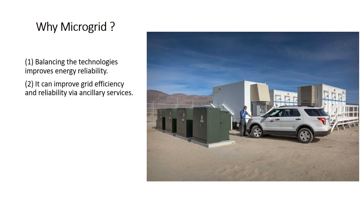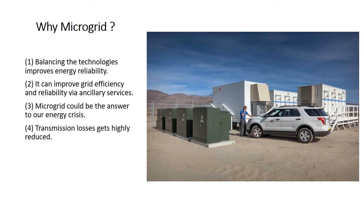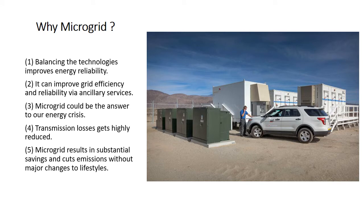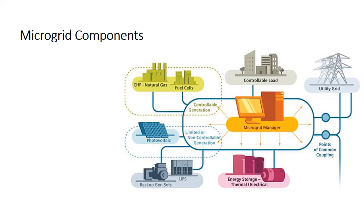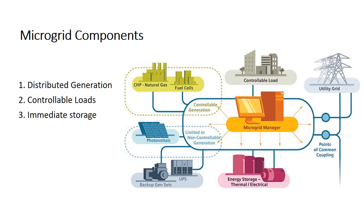Microgrid could be the answer to our energy crisis. Transmission losses are highly reduced; microgrid results in substantial savings and cuts emissions without major changes to our lifestyles. It provides high quality and reliable energy supply to critical loads. Microgrid components include: distributed generation, controllable loads, immediate storage, controller of microgrid, and point of common coupling.